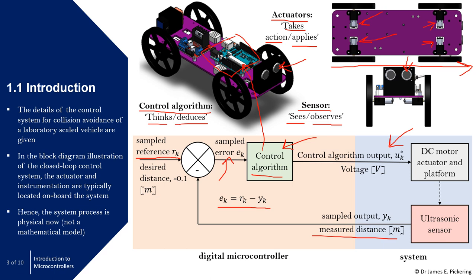The control algorithm on the Arduino Uno maps the input from the ultrasonic digital sensor to an output voltage being supplied to the DC motor. The input is from the ultrasonic sensor, and the output is a voltage to the DC motor. The amount of voltage supplied is based on the difference between the reference and the measured value.